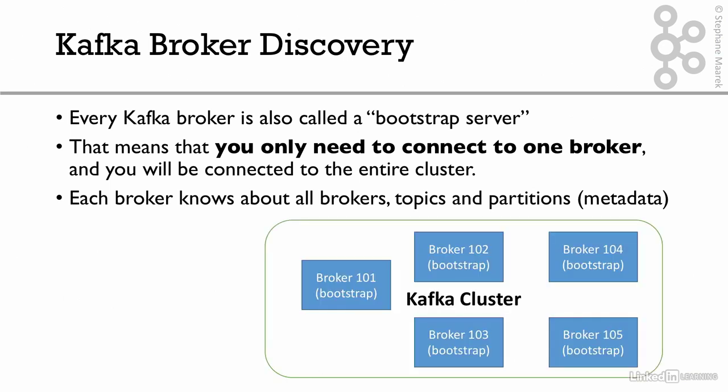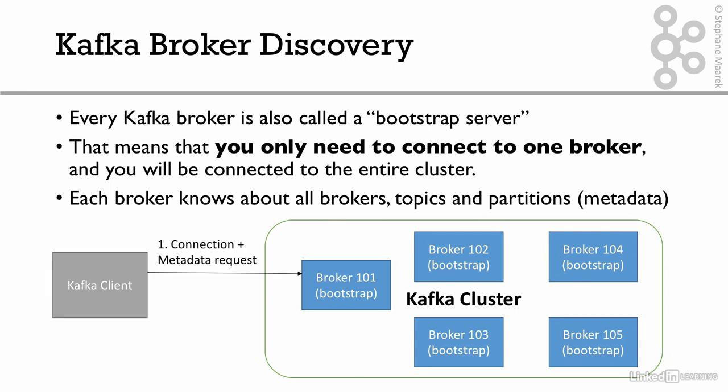Here's what it looks like: say we have a Kafka cluster with five brokers, and as mentioned, all of them are bootstrap brokers. Your Kafka client — whether a producer or consumer — will connect to, say, broker 101, but it could connect to any of them: broker 102, broker 103, anyone you want. Once you connect to your first broker and the connection is established, your client automatically behind the scenes will do something called a metadata request.